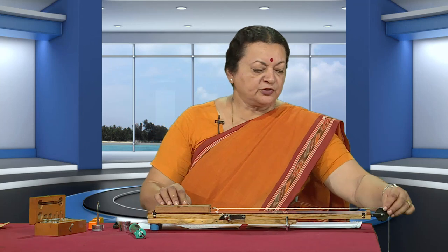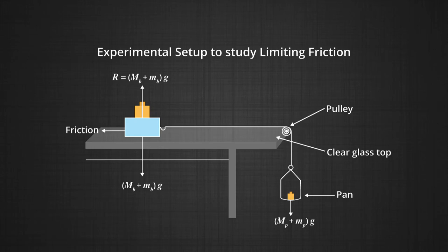For our experiment, we have a horizontal table with glass fixed on it, a block of wood, a pulley arrangement with a pan fixed here, some weights, a spirit level, and a spring balance.